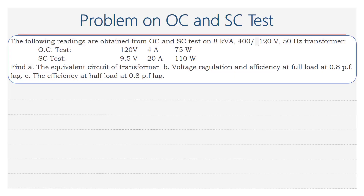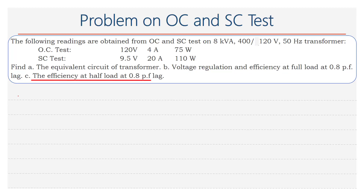This is a problem where we need to find the equivalent circuit parameters of a transformer, the voltage regulation and efficiency at full load at 0.8 power factor lag, and the efficiency at half load at 0.8 power factor lag. These three we need to determine. Let us first calculate cos φoc.